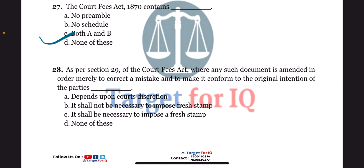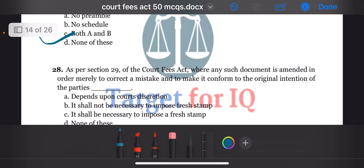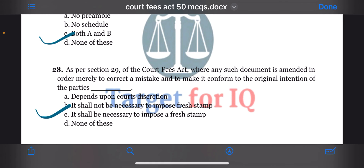Next question: as per section 29 of the act, where any such document is amended in order merely to correct a mistake and to make it conform to the original intention of the parties dash. The options are A. Depends upon court's discretion, B. It shall not be necessary to impose fresh stamp, C. It shall be necessary to impose fresh stamp, or D. None of these. The correct answer is option B. It shall not be necessary to impose fresh stamp.